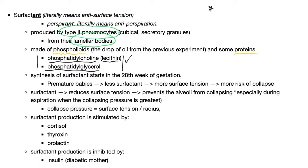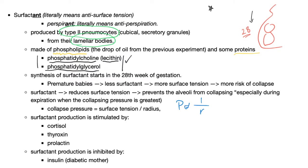Synthesis of surfactant starts in the 28th week of gestation. When you were inside your mother's womb, you started making surfactant at 28 weeks. Therefore, premature babies will have less surfactant and a higher likelihood of their lungs collapsing. Surfactant — anti-surface tension — prevents alveoli from collapsing, especially during expiration. Why during expiration? Because collapse pressure is inversely related to radius. During expiration, the radius of the airway decreases, the collapsing pressure increases, making collapse more likely. Surfactant prevents that.